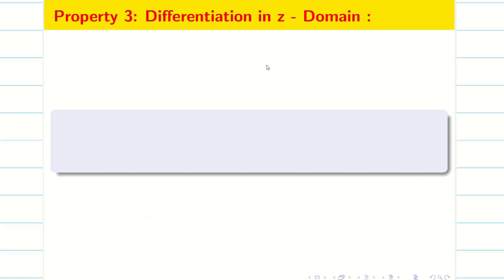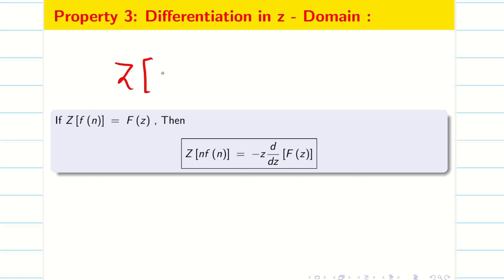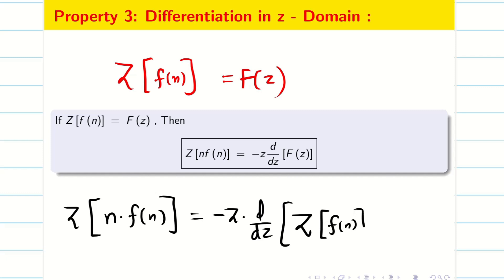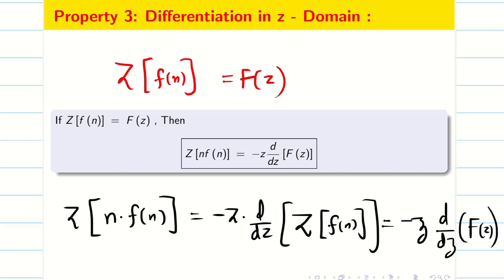Differentiation in Z-domain. If Z of F(n) is equal to capital F of Z, then what is the formula for Z of n into F(n)? The answer is minus Z d/dz of Z of F(n), or we can write this as minus Z d/dz of capital F(Z). We are going to see some problems based on this differentiation in Z-domain property.